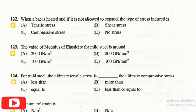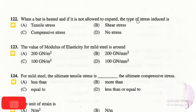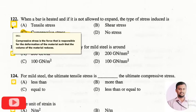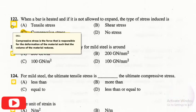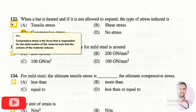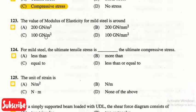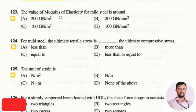The next question is: when a bar is heated and it is not allowed to expand, the type of stress induced is? The right answer is compressive stress. Compressive stress is the deformation of a material such that the volume of the material is reduced under the action of some force.